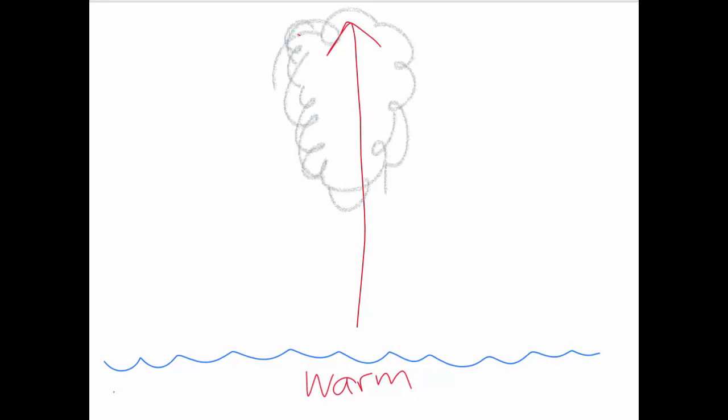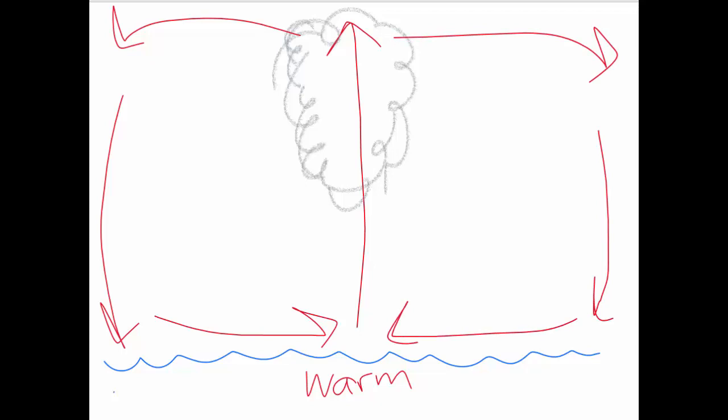We start to form these convection currents and so we get down here at the very bottom we get low pressure forming. Remember from our video about weather when the air is rising you have low pressure. When air is coming down it's squishing you and you end up with high pressure. So we have high pressure here, air always goes from high pressure to low pressure.